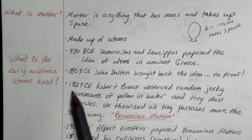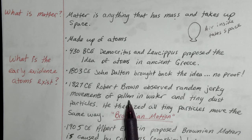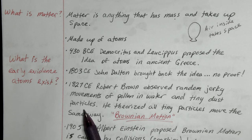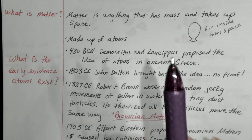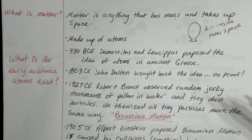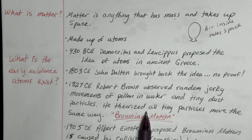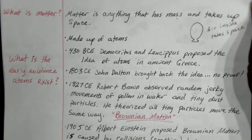In 1827, Robert Brown observed random jerky movements of pollen in water and tiny dark dust particles. He noticed that dust particles would do those crazy random jerky movements, and pollen floating in water would just kind of shake around. He theorized that all tiny particles move the same way, and that is what he called Brownian motion — that definition we had at the beginning.